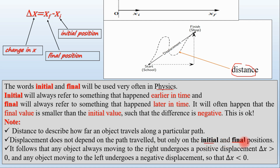It follows that any object always moving to the right undergoes a positive displacement.